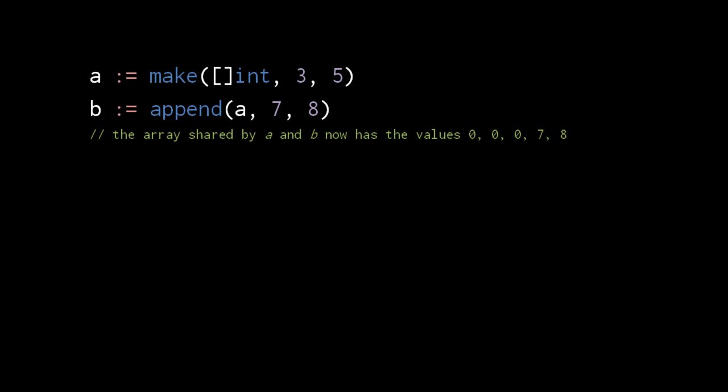When we append the values 7 and 8 to a, the array shared by the original slice and the new one now has the values 0, 0, 0, 7, and 8. However, slice a still has a length of 3, and so if we attempt to access index 3 of slice a, we get a runtime out-of-bounds error.